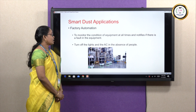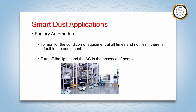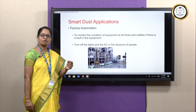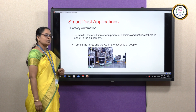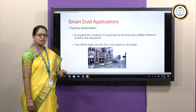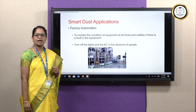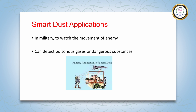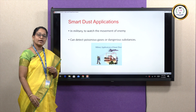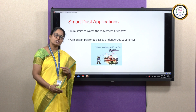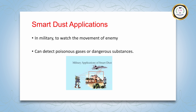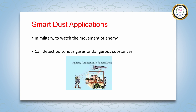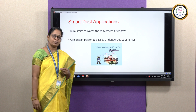SmartDust plays an important role in factory automation. The condition of each equipment is monitored at all times and it notifies if there is a fault. The computer can also be programmed to turn off the lights and AC in the absence of people. SmartDust also serves its purpose in surveillance and military — it is used to watch the movement of the enemy in cases where it is impossible for drones and humans to reach the place. It can also detect poisonous gases or dangerous substances present in the air and signals an alert to leave the premises.